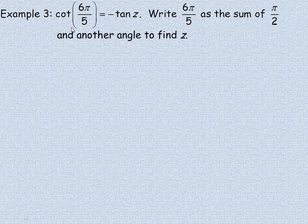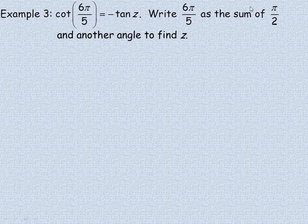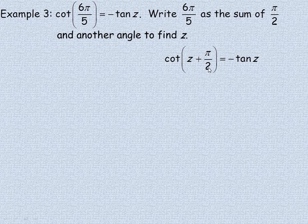In example 3, we're given that the cotan of 6 pi over 5 equals the negative of the tan of some unknown angle z. We're asked to write 6 pi over 5 as the sum of pi over 2 and some other unknown angle — referring back to those identities — in order to find z.